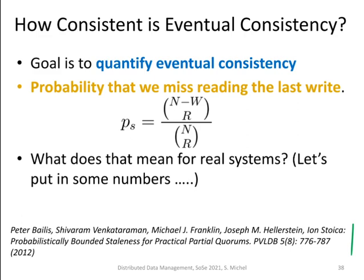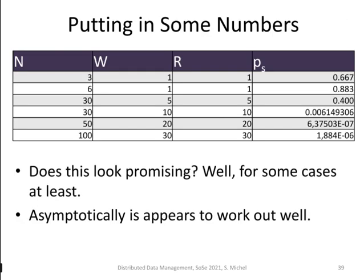Here we see how to compute the probability that we miss reading the last write — it is simply all combinations where you're missing it divided by all possible combinations of reading R replicas from N replicas. This doesn't say a lot; we have to put in some numbers to see how this behaves.